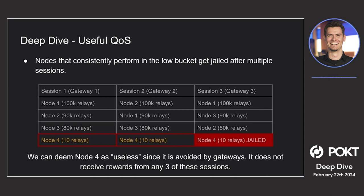Because jailed nodes don't receive rewards in useful QoS, and rewards are delayed — say you delay rewards from a session by six sessions — if a node is jailed in session three, by the time session six comes around, that jailed node gets no rewards from the original session one. By delaying rewards, you're able to observe whether a node is accepted by other gateways, then jail it and exclude it from reward distribution.